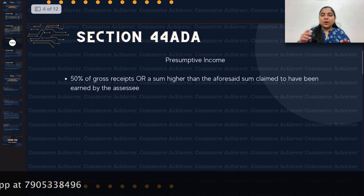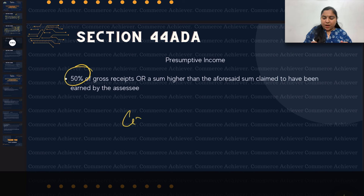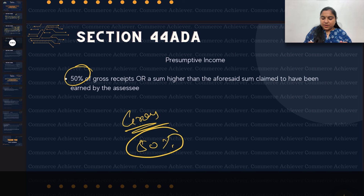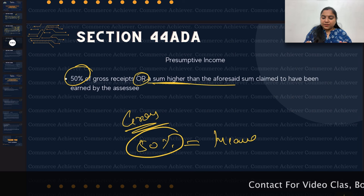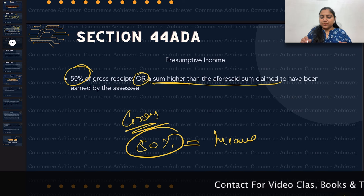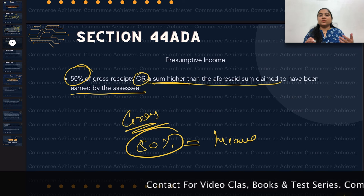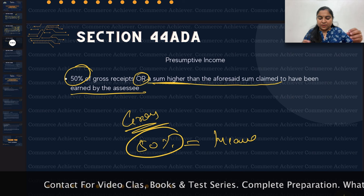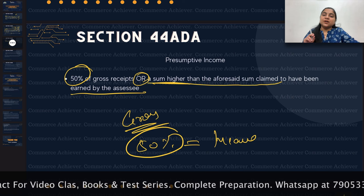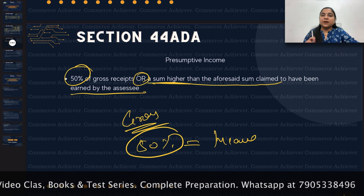What amount will be the presumptive income? 50% of gross receipt will be your income. But if you have earned something higher from an asset, if your actual income is more than that, that income will be given. Otherwise, 50% of gross receipt is the presumptive income.